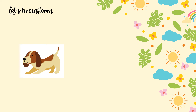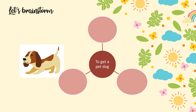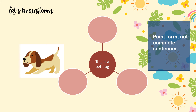Now we learned that we first need an opinion. Our opinion is that getting a pet dog would be great, and we are going to convince our parents to get a pet dog. We are now on the brainstorming stage. When we're brainstorming we don't write complete sentences — instead we write in short, point form.